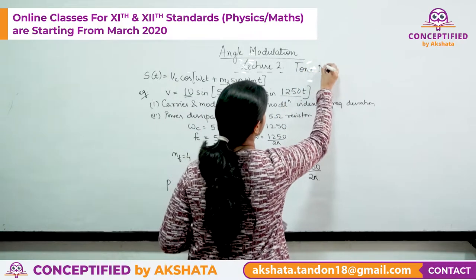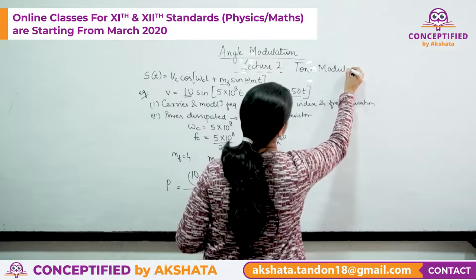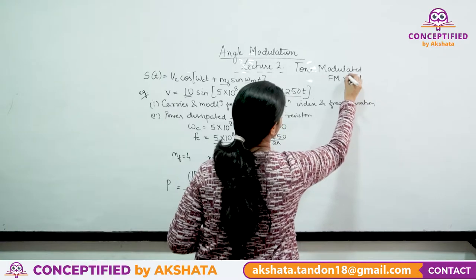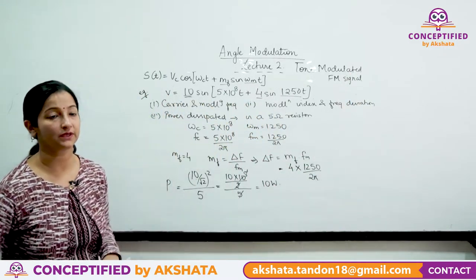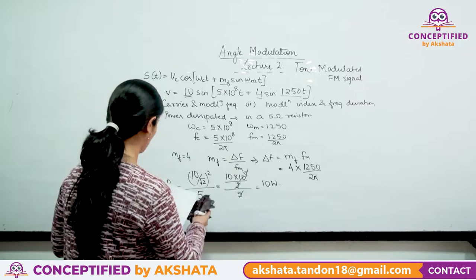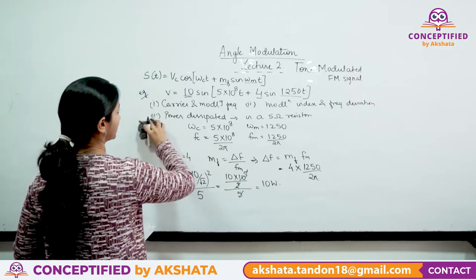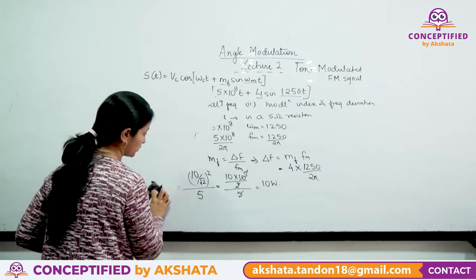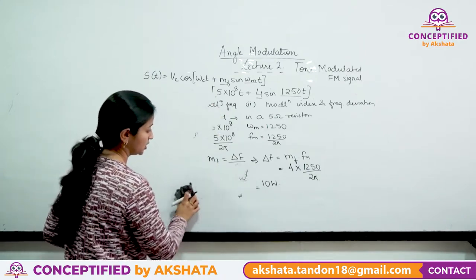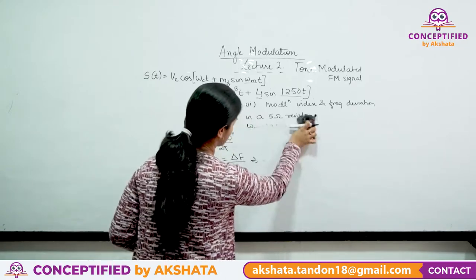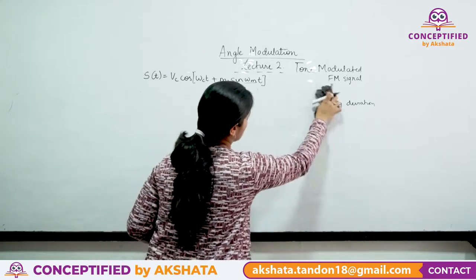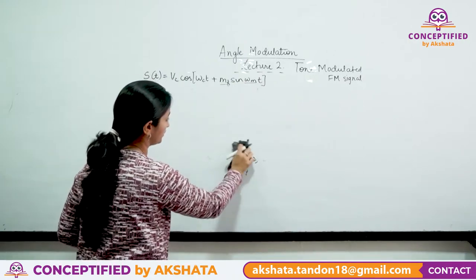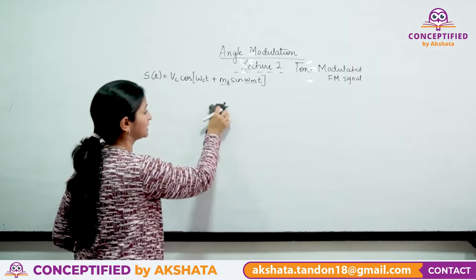A tone modulated FM signal is at a single modulating frequency, which we generally denote as fm. Let's take this equation and begin — this is where we left the last lecture. It is tone modulated because ωm is a single frequency.